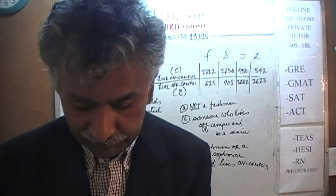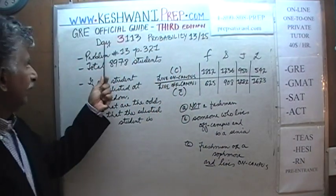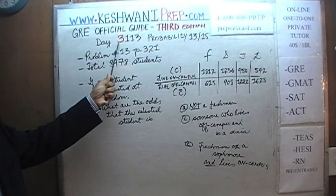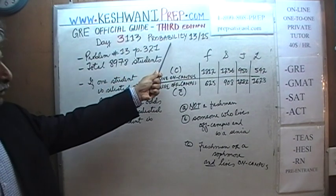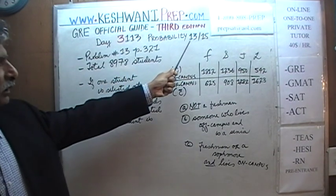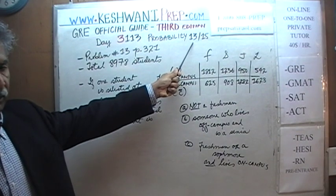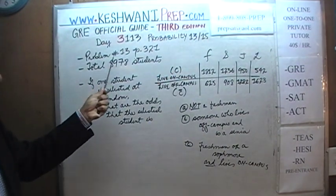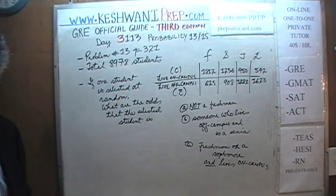Today is our lesson number 113, day 3113. The 3 is to signify the fact that we are in the third edition — third edition, day 113. We are on the topic of probability and this is the 13th lesson, the 13th video in a series of 15. Today we will do problem number 13, which you will find on page number 321.